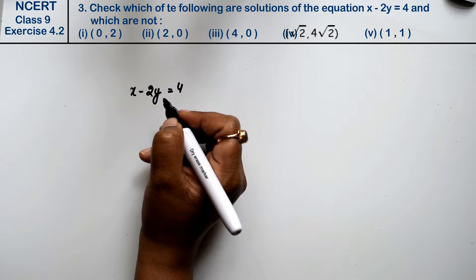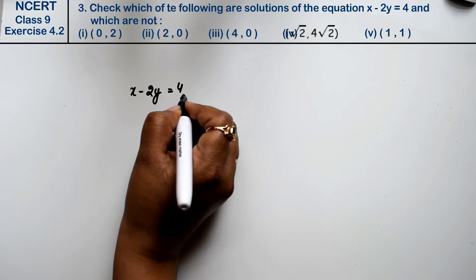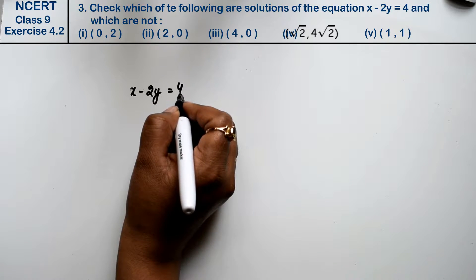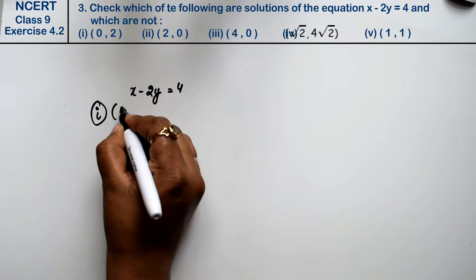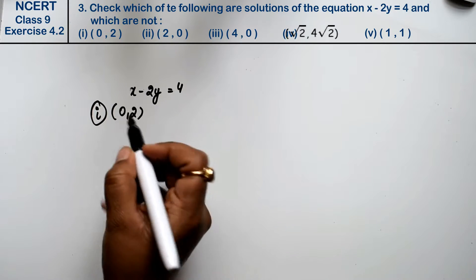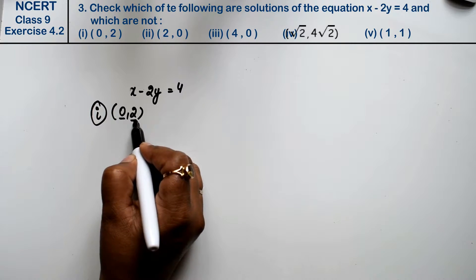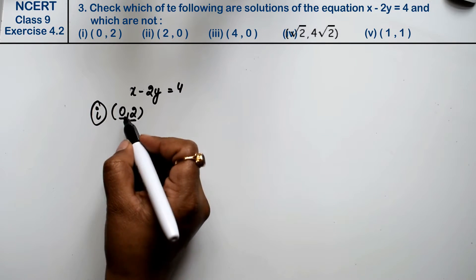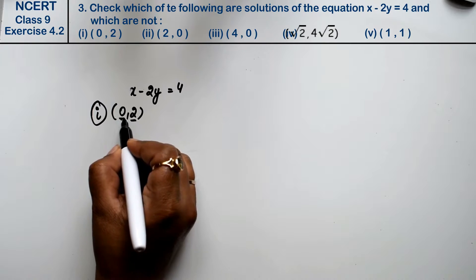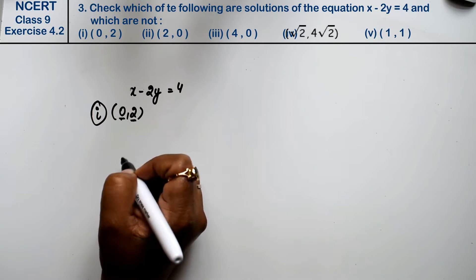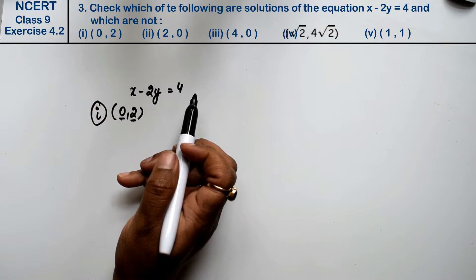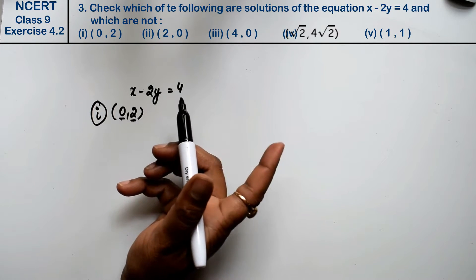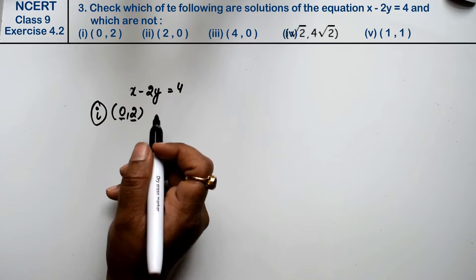We need to tell which point is the solution. First point is (0, 2). The first value is x and second value is y. We will write x's value and y's value and then check whether left-hand side and right-hand side are equal or not. If equal, it is the point, otherwise not.